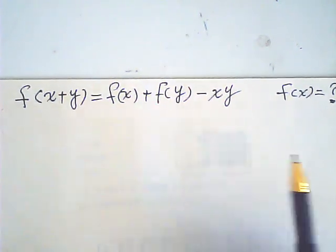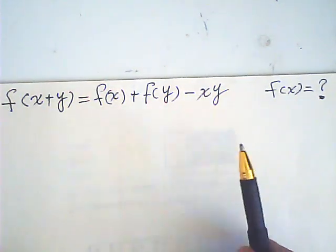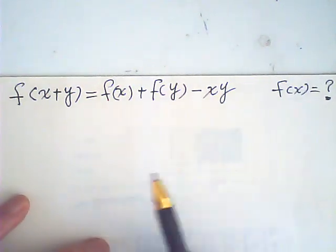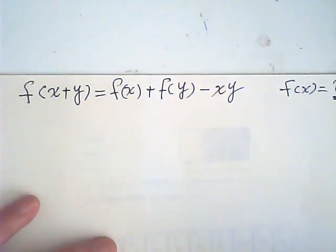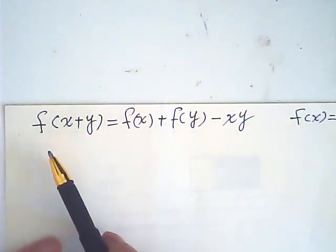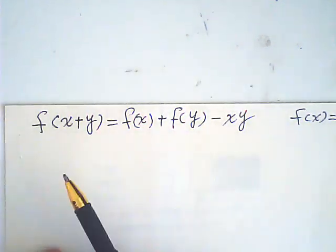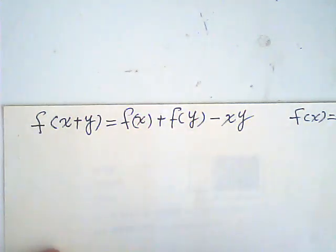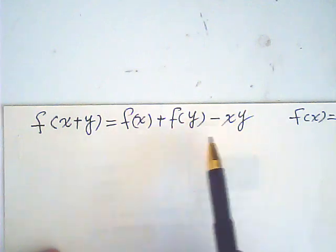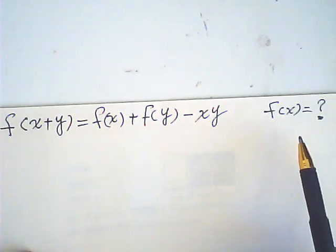I saw this question on YouTube. I have my own way to do it, so I would like to share with you. Now, given that f of x is a continuous and differentiable function, and this is the equation given, find f of x.